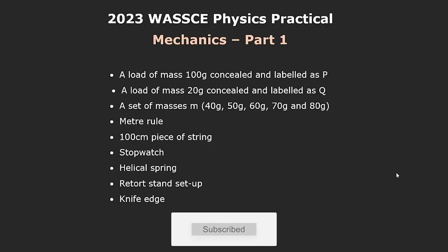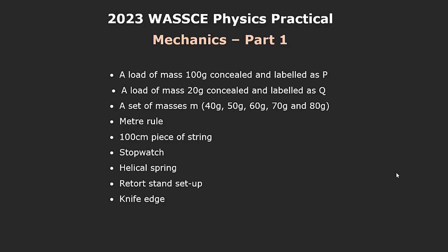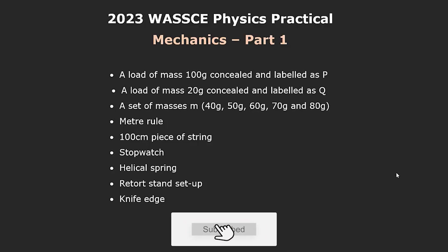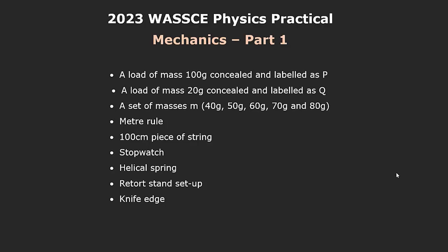Let's start off with the apparatus that WAAS asked schools to provide. You'll be asked to provide a load of mass 100 grams, concealed and labelled P, another mass of 20 grams concealed and labelled Q, a set of masses, a meter rule (100 cm), piece of string, stopwatch, helical spring, retort stand setup, and knife edge.